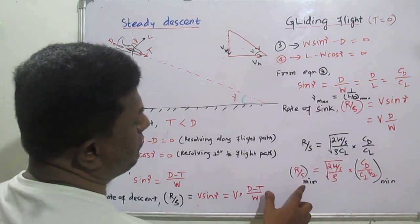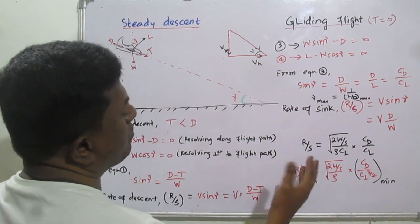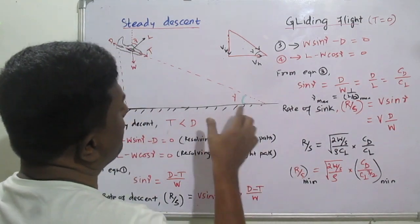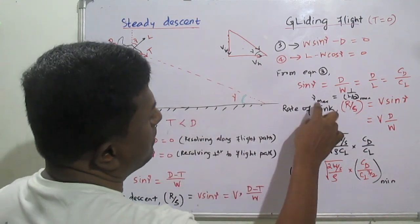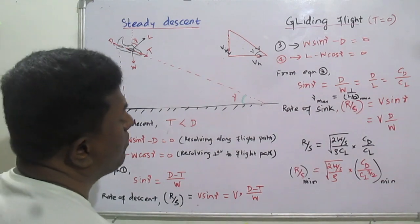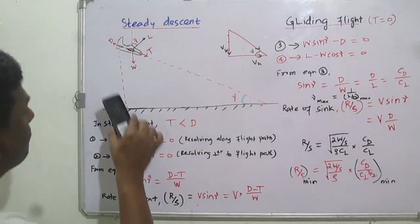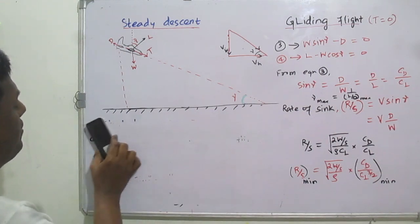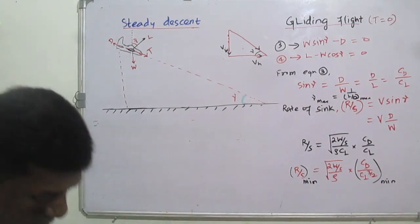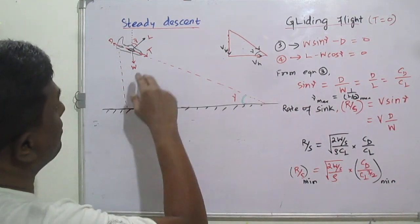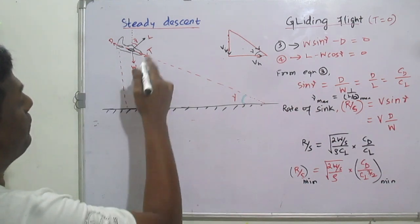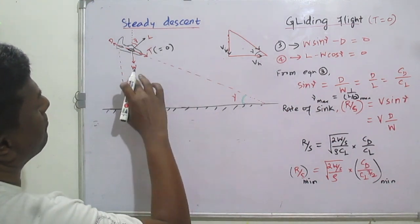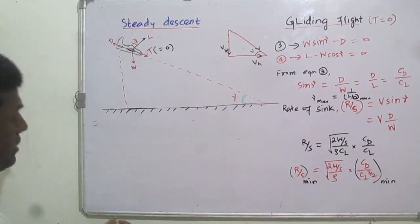So, minimum rate of sink allows the aircraft to glide for a longer duration, and maximum angle of glide is also determined. Now we can explore range and endurance for gliding flight. When thrust equals zero, steady descent becomes gliding flight, and we can analyze the range and endurance in this condition.